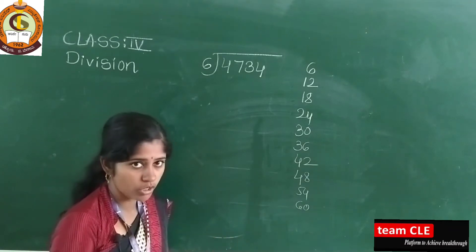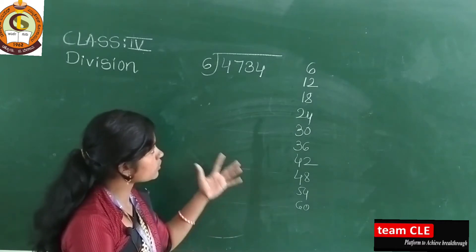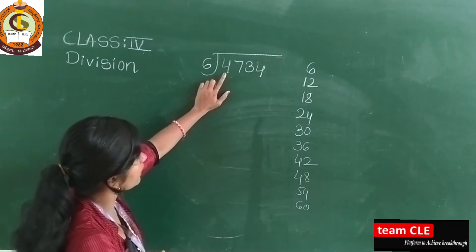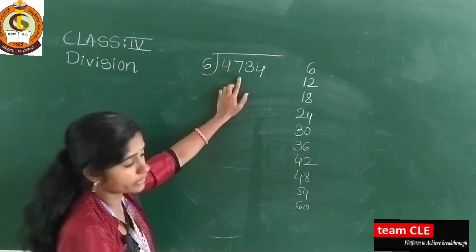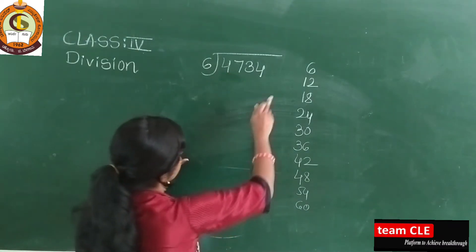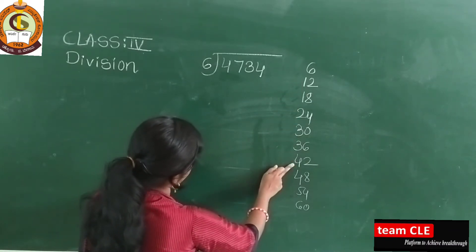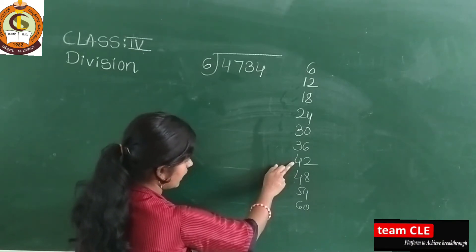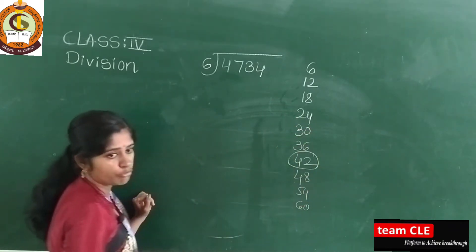It is better to write tables in one corner — it gives practice and helps you learn the tables while solving. Now take the first digit 4. Since 4 is less than 6, I can't take just 4, so I take 47. Looking at the table: 6, 12, 18, 24, 30, 36, 42 — then 48 is too big. The nearest small number is 42.